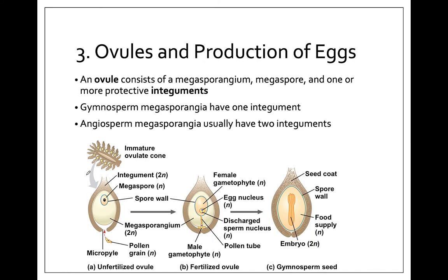The third new characteristic is the ovules. Because of heterosporous production we can make specifically female and specifically male structures. Here's a pine cone — a female pine cone — and each of these little leaflets has a single ovule. The ovule contains the megasporangium, which is diploid and part of the sporophyte. It also contains the megaspore, which is haploid — our female spore and part of our gametophyte.